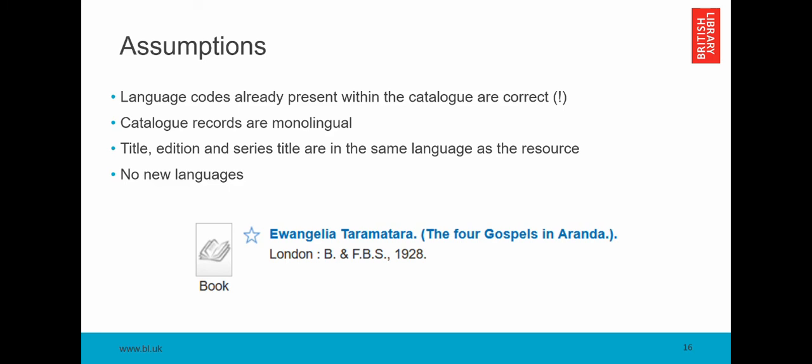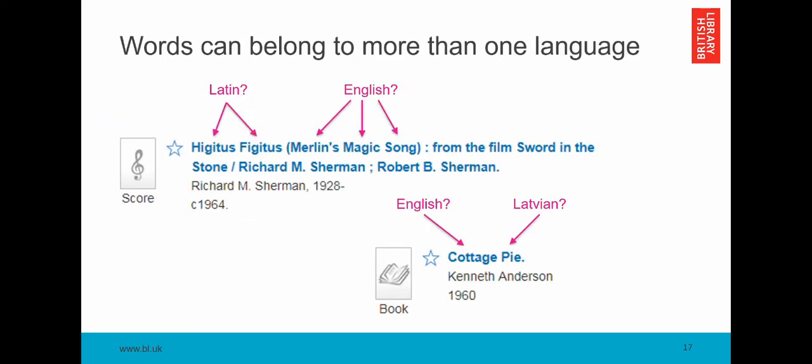Here's an example of a catalog record which is contradicting our second and third assumptions. The catalog record here is not monolingual. It's written in a combination of Aranda and English, although from that title we can probably guess that the resource itself is written primarily in Aranda. And something else that we need to be aware of is words belonging to more than one language can lead the model astray. So if we are the computer model coming to look at this record, we might start by thinking Higitus, well that's a Latin word. Figitus, that's a Latin word. Merlin, not sure about Merlin, I'll leave that one for now. Magic, well that's English. Song, that's English as well. Or maybe it's Chinese. But just looking at the beginning of the title, the computer might really not be sure whether to predict Latin or English. But thankfully there are sufficiently many distinctive English words in the remainder of the title that we can be fairly confident that the model will make a prediction of English by the time it's read the whole title.